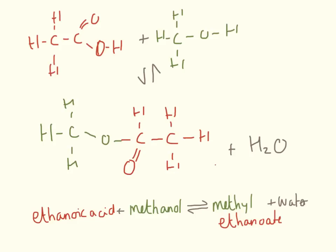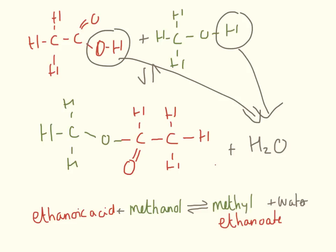Here is what it looks like: ethanoic acid with its two carbons and carboxylic acid functional group, and methanol with its one carbon and alcohol functional group. This is a reversible reaction and requires a very strong acid catalyst. The diagram is colour-coded so you can see which part of the ester comes from the ethanoic acid and which comes from the methanol. Essentially both donate one oxygen, and the remaining atoms go off to form water.